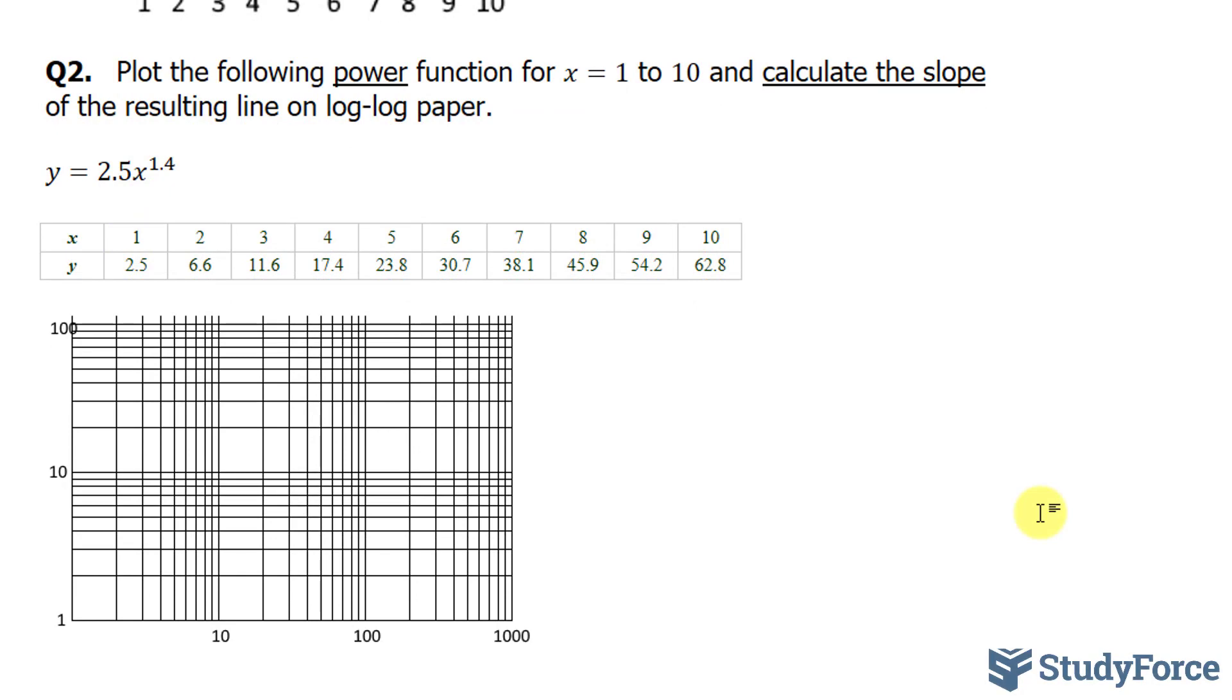The first point that we'll be plotting is 1 and 2.5. 1 and 2.5 is, well, that's 1. And 2.5, this will be 2, 3, 4, 5, 6, 7, 8, 9. So 1 and 2.5 will be right here.